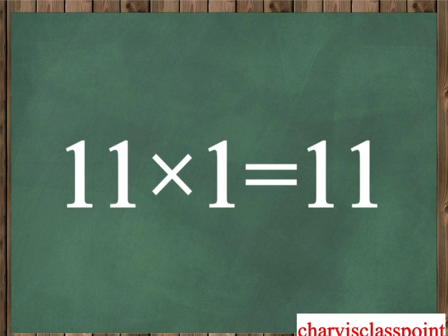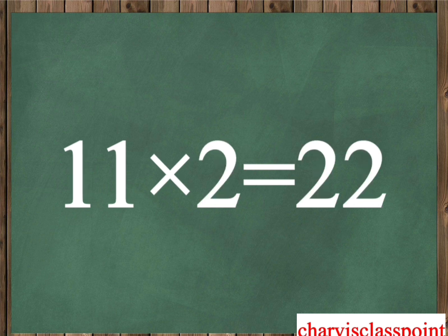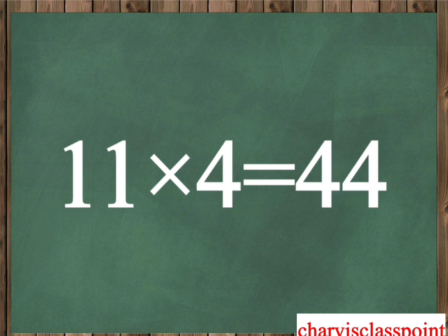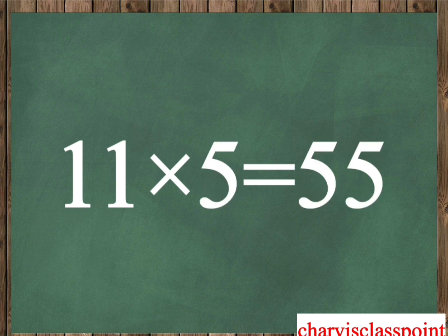Eleven one is eleven. Eleven two is twenty-two. Eleven three is thirty-three. Eleven four is forty-four. Eleven five is fifty-five.